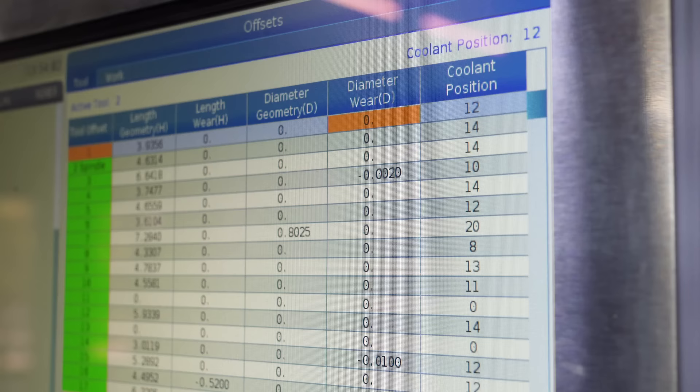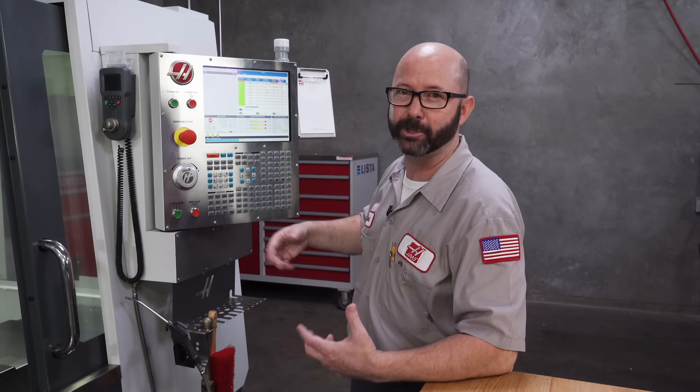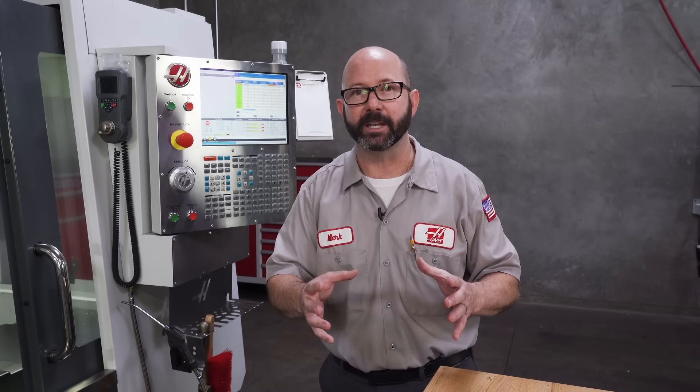And then, all we enter on our offset page is our diameter wear, our wear geometry, usually a small number. And we let the CAM system adjust all of our feed rates. The other option is to compensate them by hand, like we showed you earlier with those formulas.